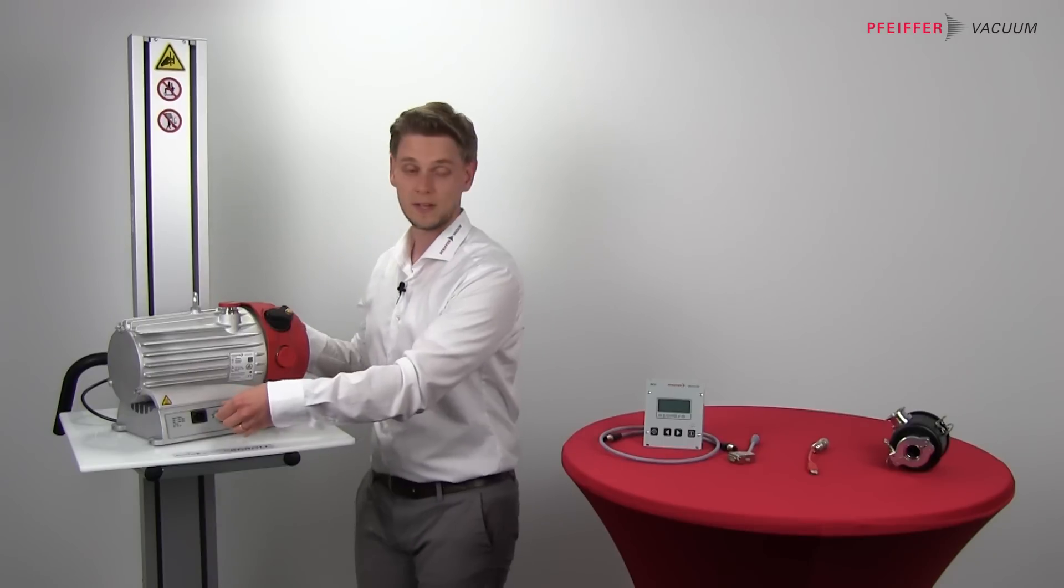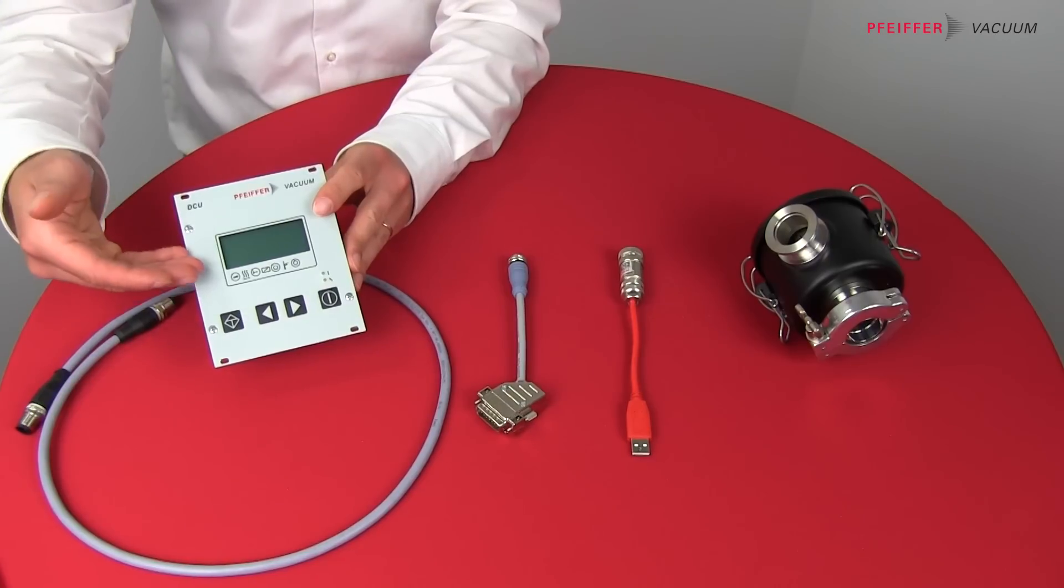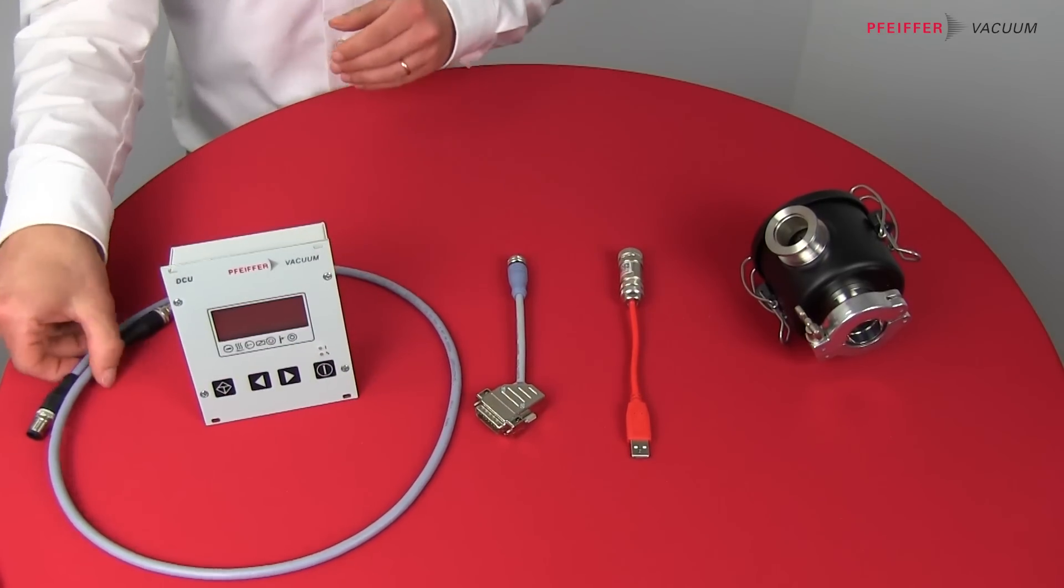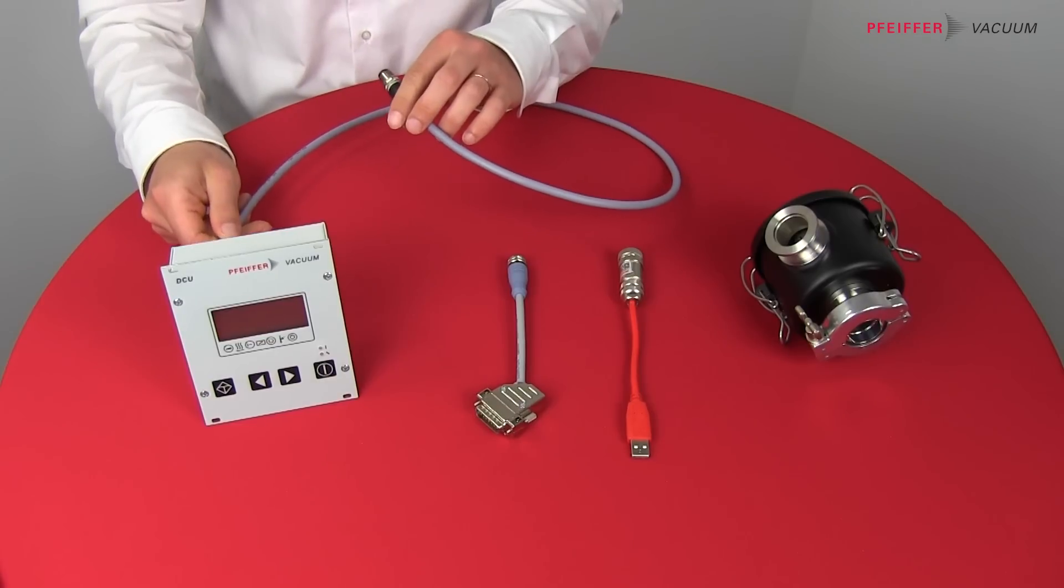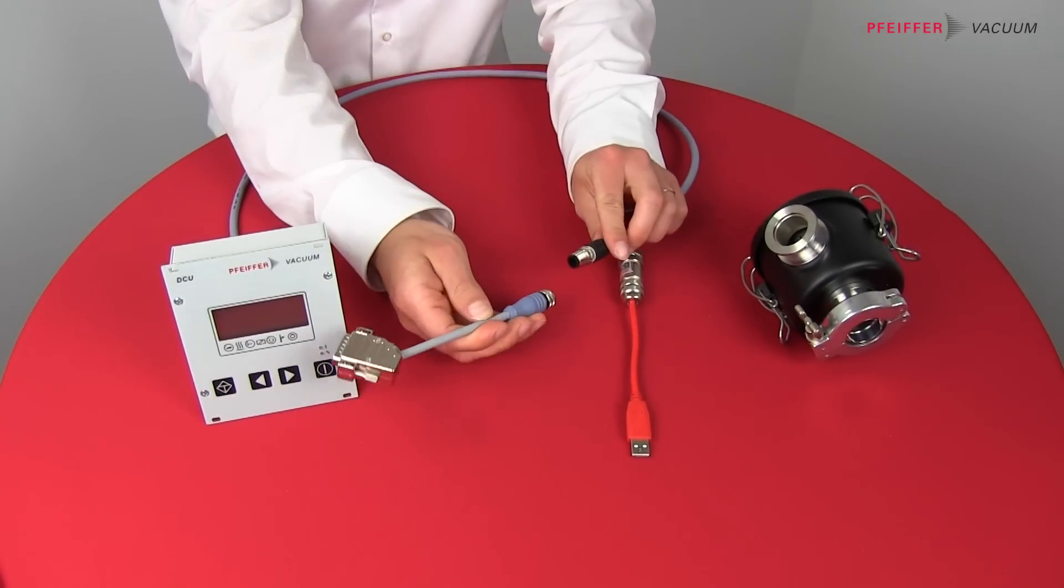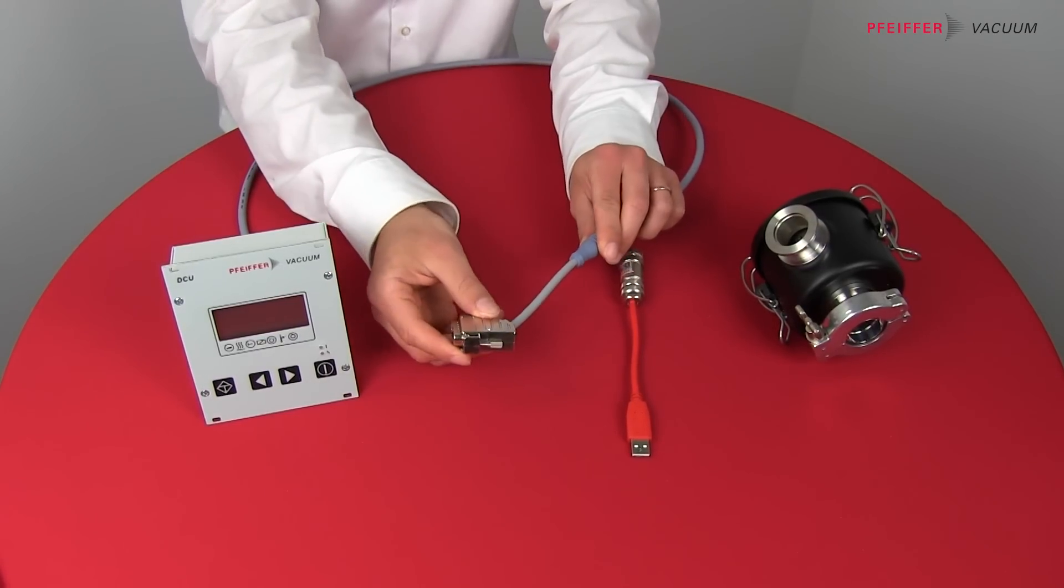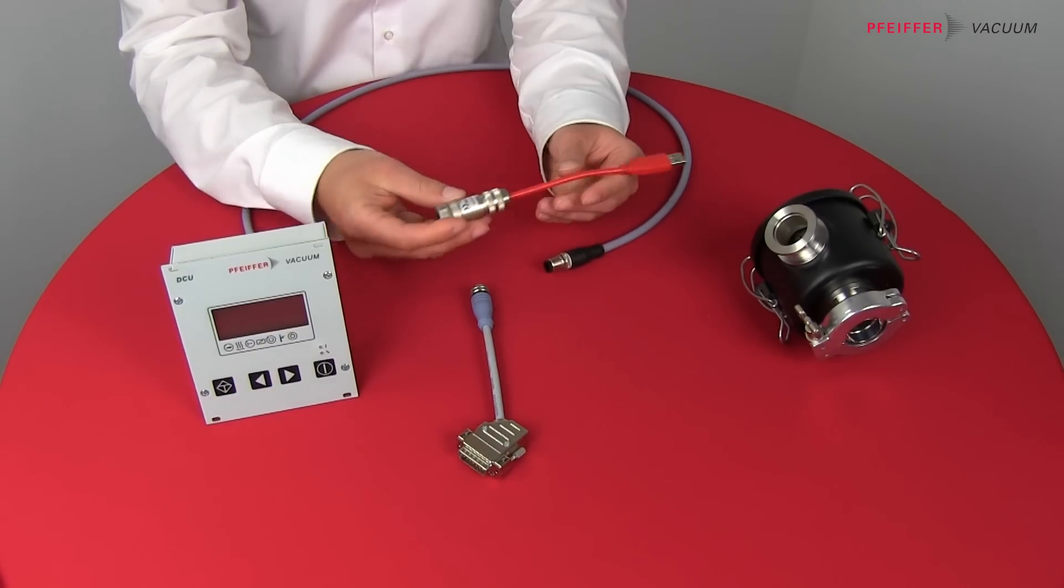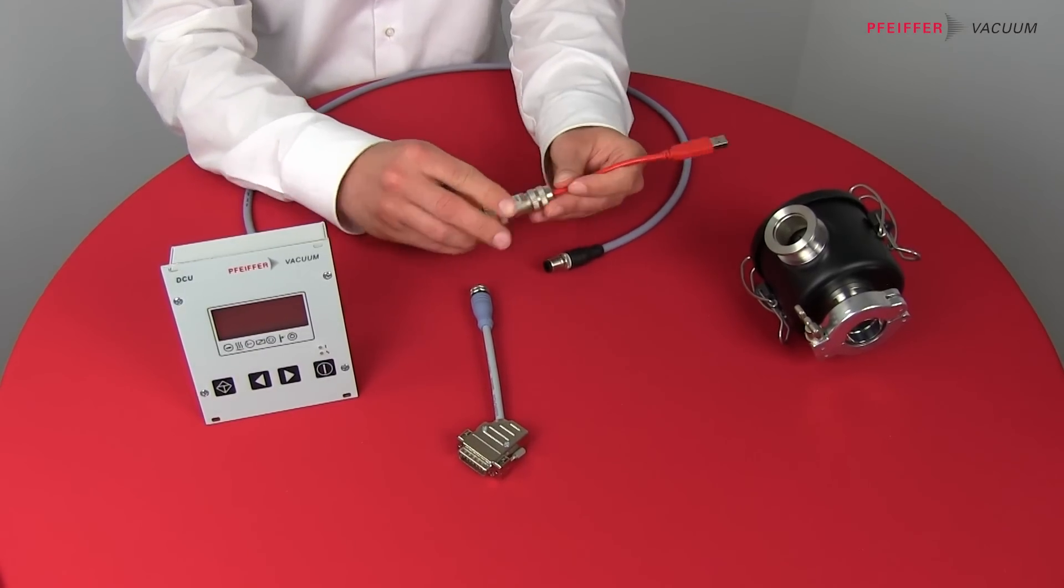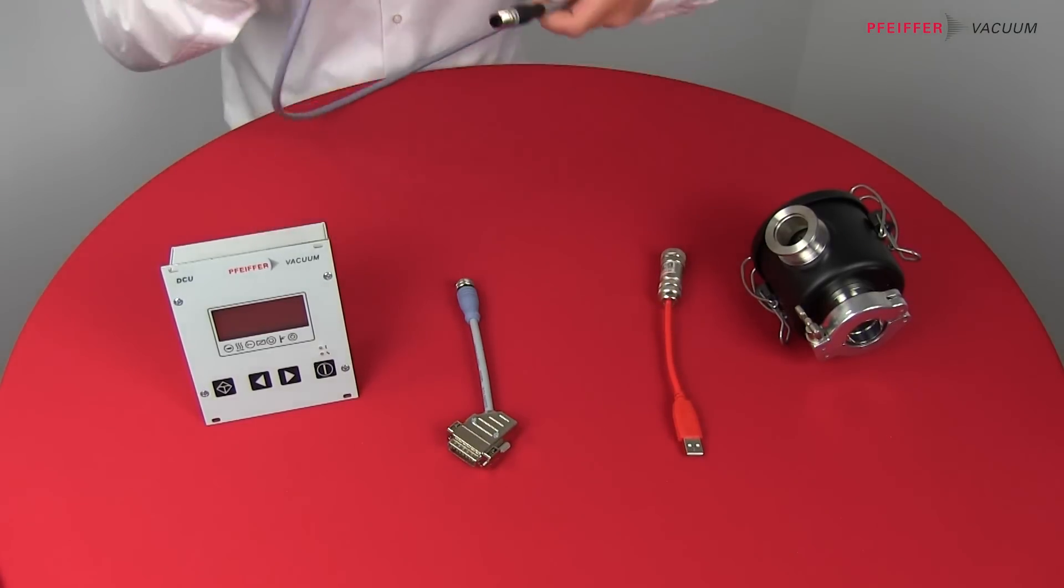And of course there is some additional optional accessory which I can show you here. So we have the DCU002 to show and set the parameters of the HiScroll. To connect the DCU you need the RS485 cable which will be connected to the DCU here. And to connect it to the HiScroll you need this adapter which is an RS485 M12 to Sub-D connector. And additionally if you want to control the HiScroll via PC you can use the RS485 USB adapter together with this adapter. And then you have the possibility to directly control the HiScroll via PC.